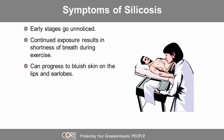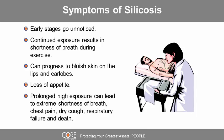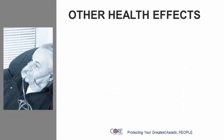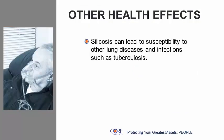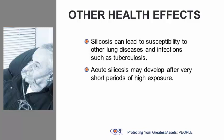Silicosis can also progress to bluish skin on the lips and earlobes. Workers can experience loss of appetite. Prolonged high exposure can lead to extreme shortness of breath, chest pain, dry cough, respiratory failure, and even death. Silicosis can also increase susceptibility to other lung diseases and infections such as tuberculosis.